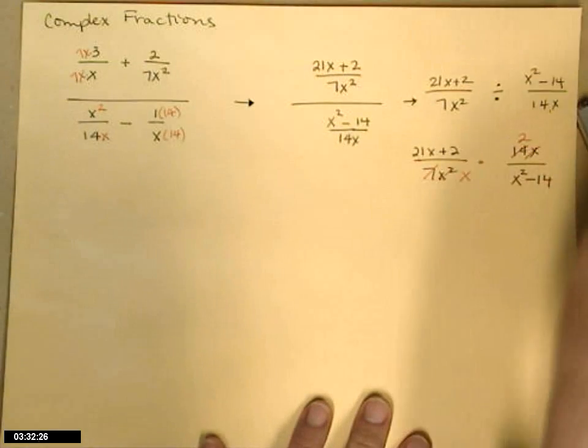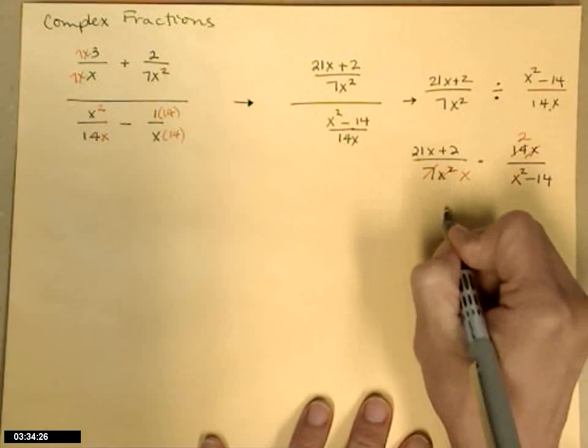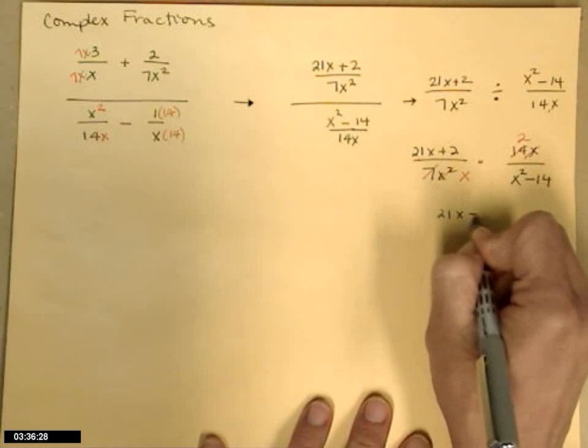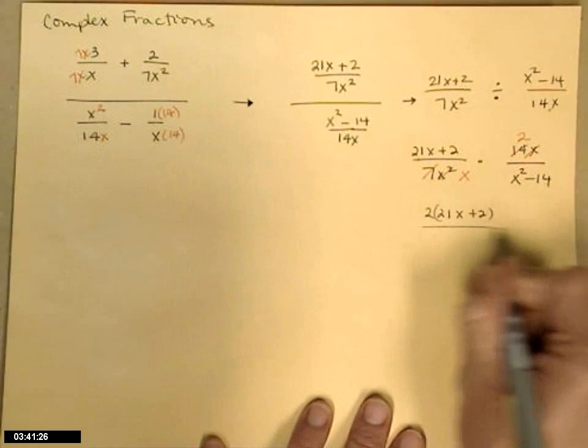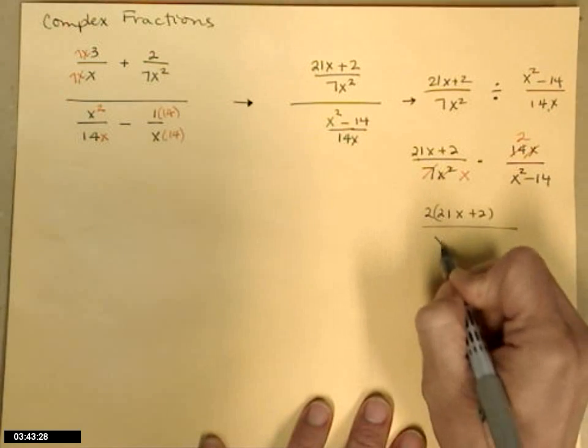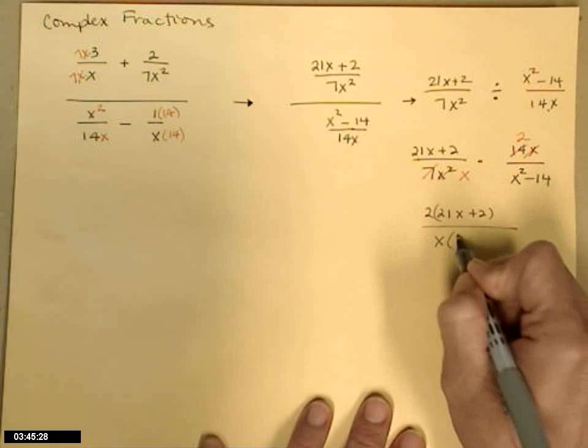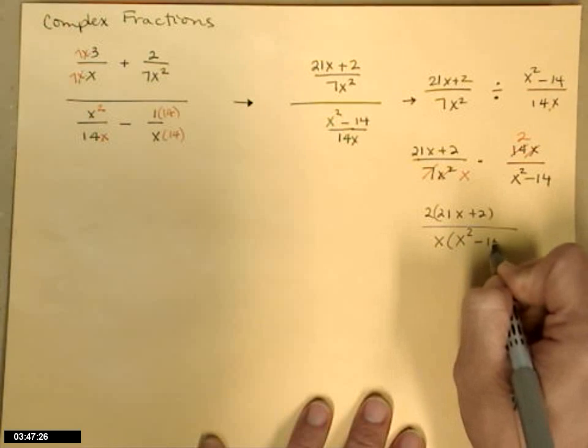I'm going to go ahead and take a regroup step. I have 21x plus 2, and then that's times a 2. I'll go ahead and put the 2 out in front.